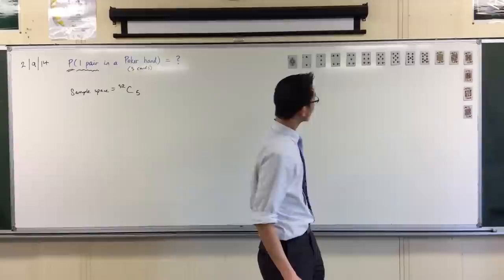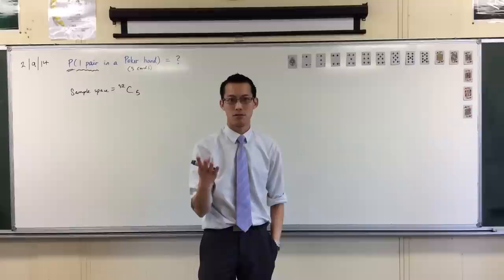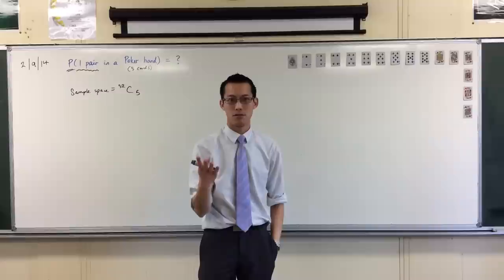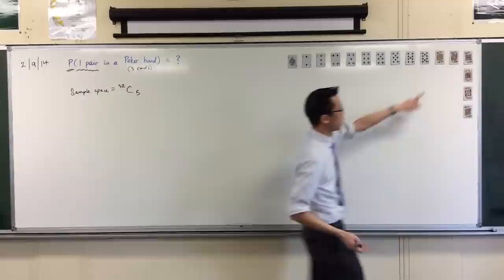So, I want to pick a pair. So the first thing I'll do is pick a value, any value. Now, how many values are there in a whole deck of 52 cards? The answer is 13, obviously, because there's four suits that are all repeated, so you get 52 over four, which gives you that 13.